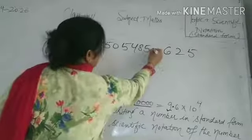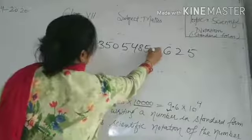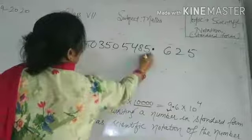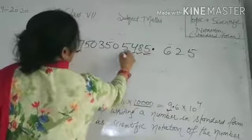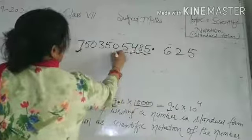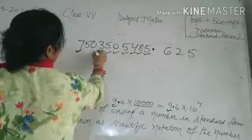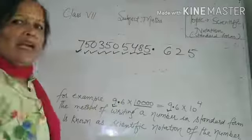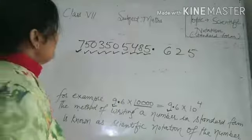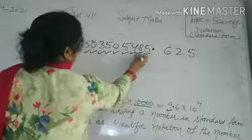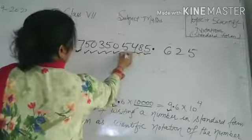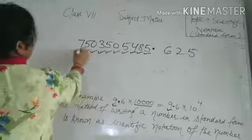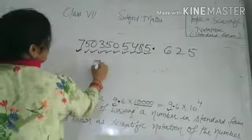The decimal point will move. How many places will the decimal move? Counting — 1 through 9 — it moves nine places. So 7 will be kept before the decimal, giving us 7.503505485625.